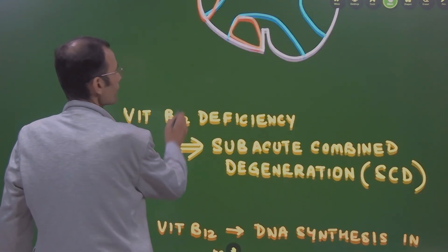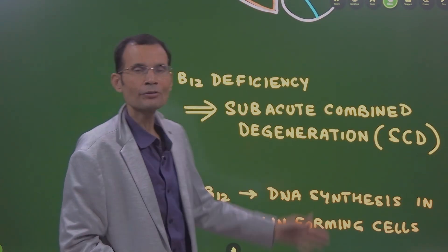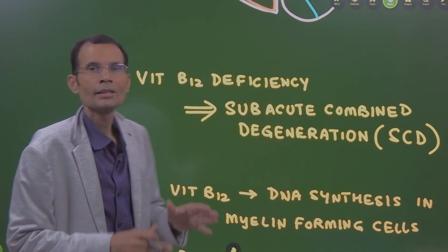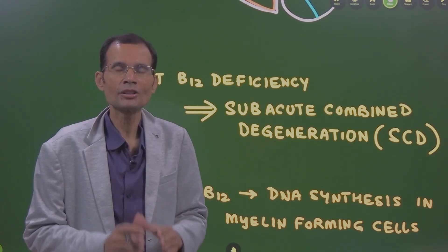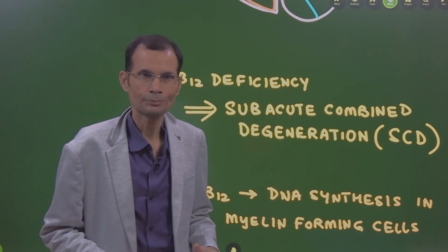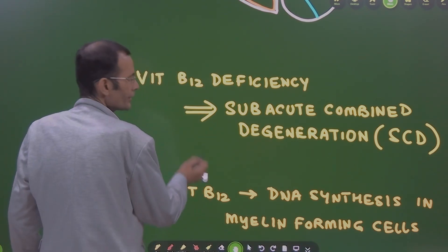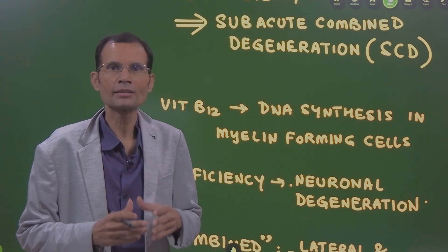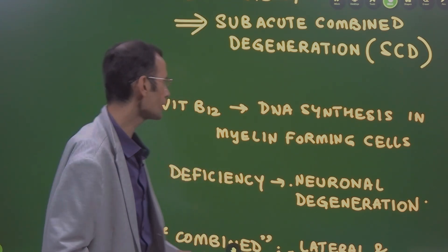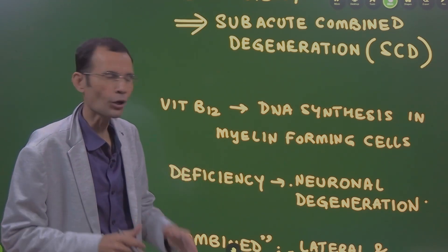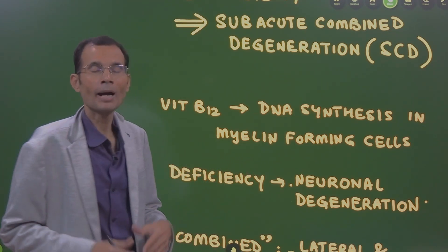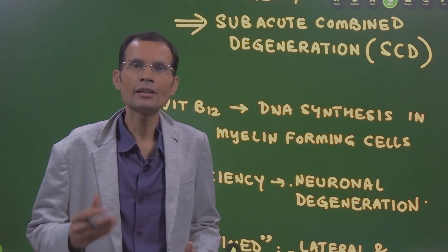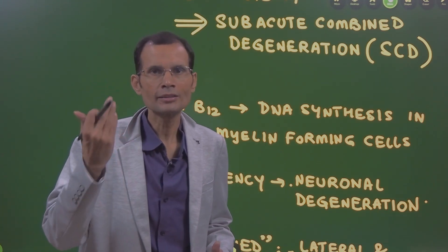Alright, now let us come to the vitamin B12 deficiency. It results in subacute combined degeneration of the spinal cord. Why is it so? It is because vitamin B12 is required for DNA synthesis and nuclear maturation. Particularly in this context, it will be for myelin forming cells, the Schwann cells for the peripheral nerves and oligodendrocytes for the central nerves.